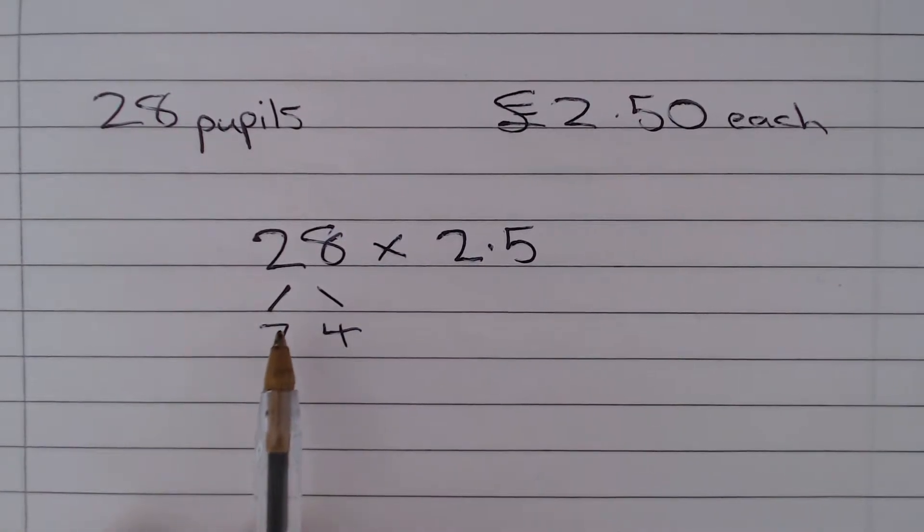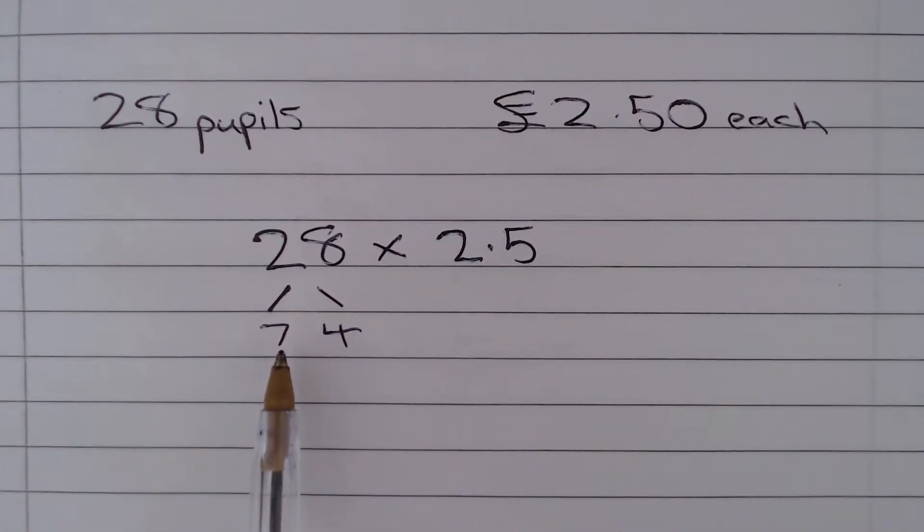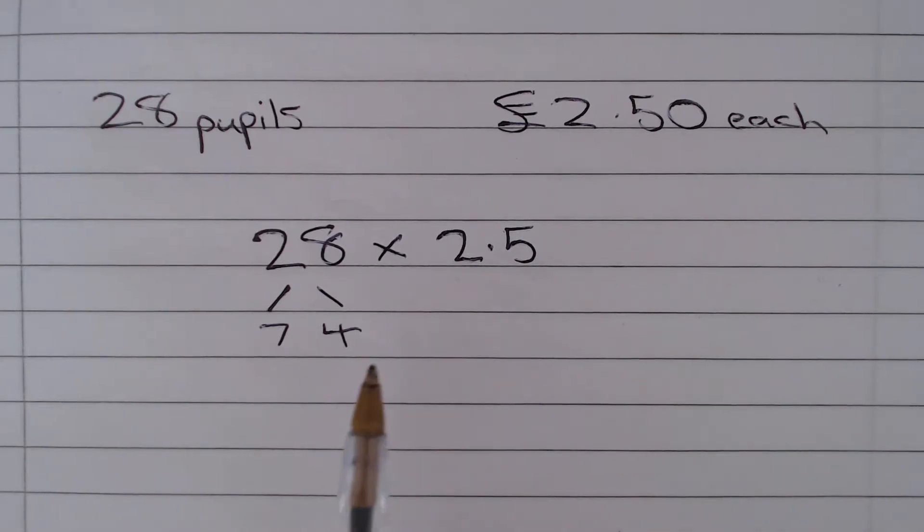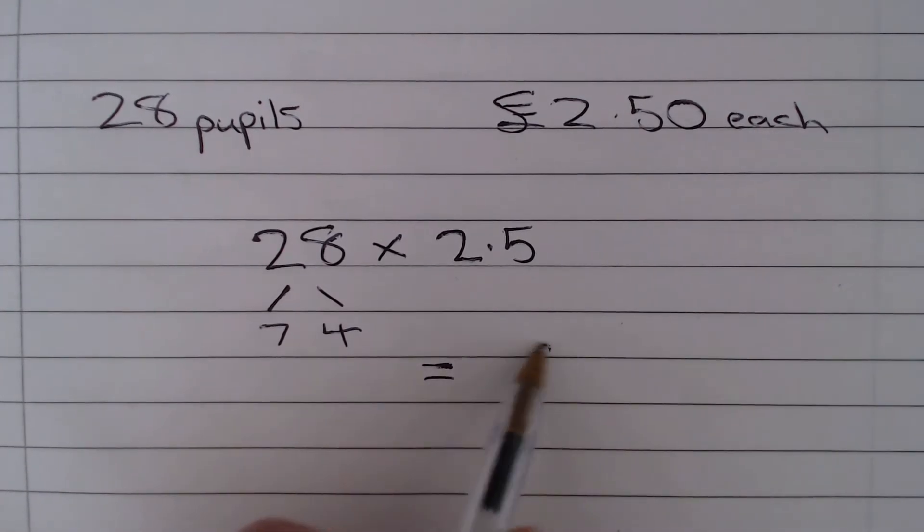So what we actually have is 28 times 2.5 is the same as 7 times 4 times 2.5, but we know 4 times 2.5 is 10, so it's just the same as 7 times by 10, which is £70.